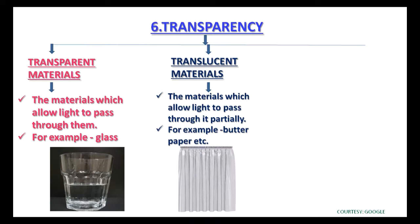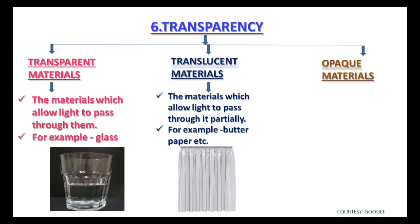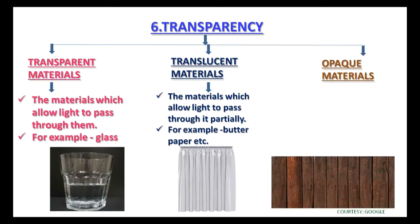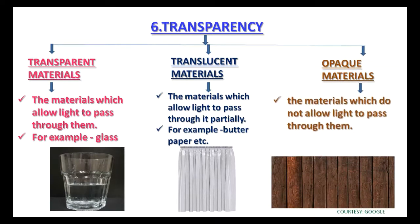Opaque materials are the materials which do not allow light to pass through them — for example, book, wood, etc.